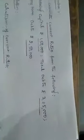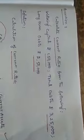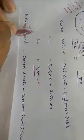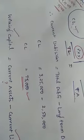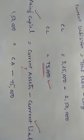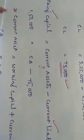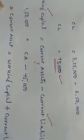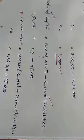Now we need to find current assets. Working capital information is available: working capital equals current assets minus current liabilities. Working capital is 1,50,000 and current liabilities are 75,000. So current assets equals working capital plus current liabilities: 1,50,000 plus 75,000 equals 2,25,000. Remember this formula: current assets equals working capital plus current liabilities.